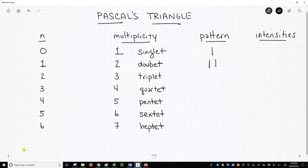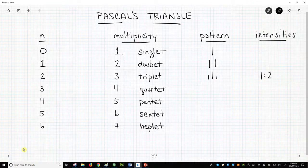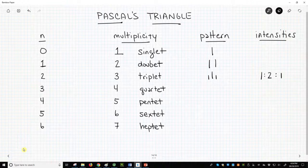The triplet is 3 lines, with a relative intensity of 1 to 2 to 1. The middle line is twice as high as the end lines.